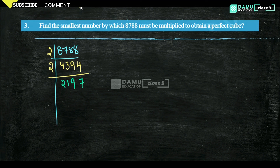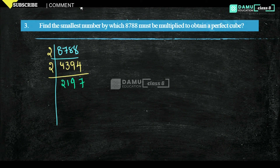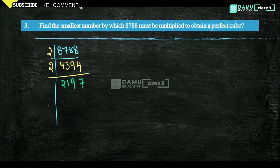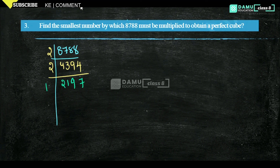Is that divisible by 3? We have to check — it gives 19, and 19 is not divisible by 3. Then 5? No. Going further, it is not divisible by 11 either. Then go with 13 — the next prime number.